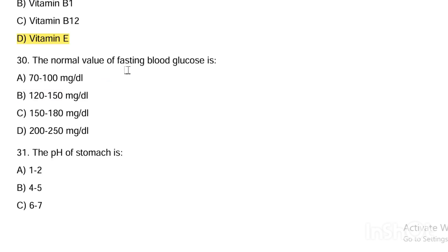Next question. The normal value of fasting blood glucose is: Option A, 70–100 mg/dL. Option B, 120–150 mg/dL. Option C, 150–180 mg/dL. Option D, 200–250 mg/dL. Answer is Option A — 70–100 mg/dL.